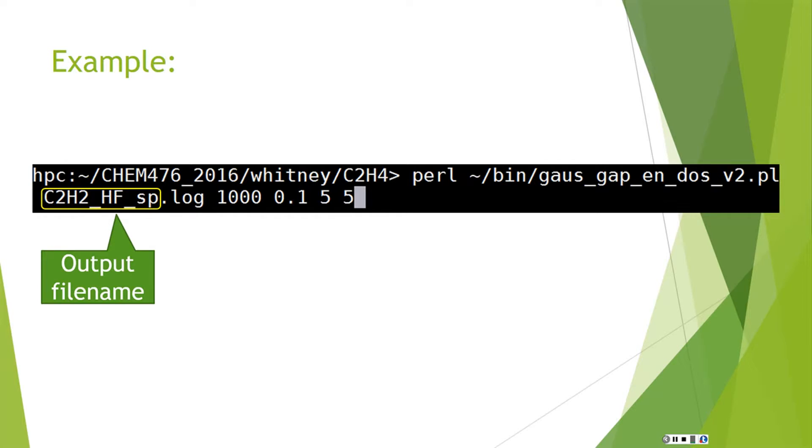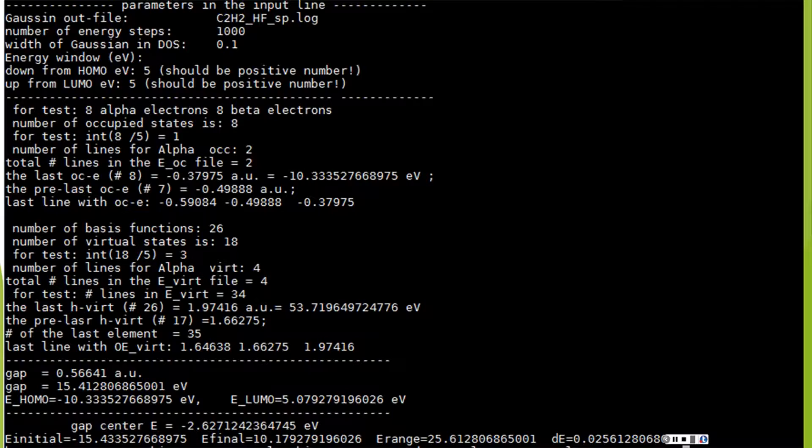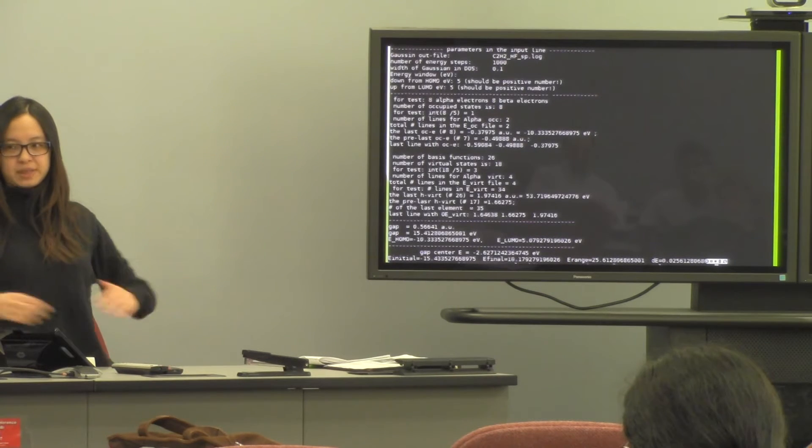That will be your output file name and .log, which is your output file extension. And then 1000 will be the steps, and 0.1 will be your bandwidth. 5 will be down from your HOMO, and 5 will be up from your LUMO. And then this thing will be generated.